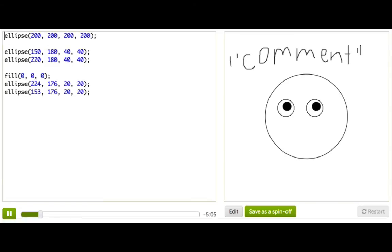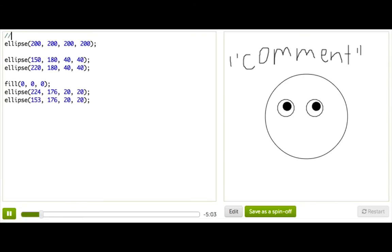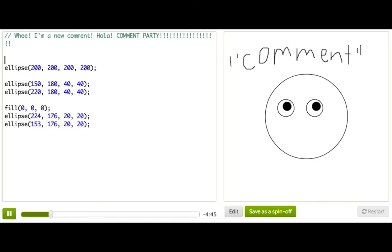In JavaScript, we write a single-line comment by starting a line with two slashes. And everything that comes after we consider a comment until there's a new line. And we can write anything in whatever language we want. And we can have a little comment party here, keep going, going, going.